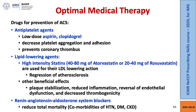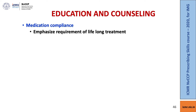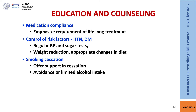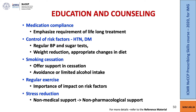The RAS blockers, or the renin-angiotensin-aldosterone system blockers, have good evidence for reducing total mortality, particularly when there are comorbidities such as hypertension, diabetes, and chronic kidney disease. Education and counseling is important. We need to educate the patient on medication compliance, emphasizing the requirement for lifelong treatment. To control risk factors such as hypertension and diabetes, they need regular blood pressure and blood sugar tests, reduce weight, and make appropriate changes in the diet. Smoking cessation is very important, and at the primary care level we can offer support in smoking cessation and advise on avoidance or limited alcohol intake. Regular exercise is important as it impacts risk factors. Stress reduction — we can offer non-medical support such as yoga or meditation. More details are available in the reference material provided along with this video.